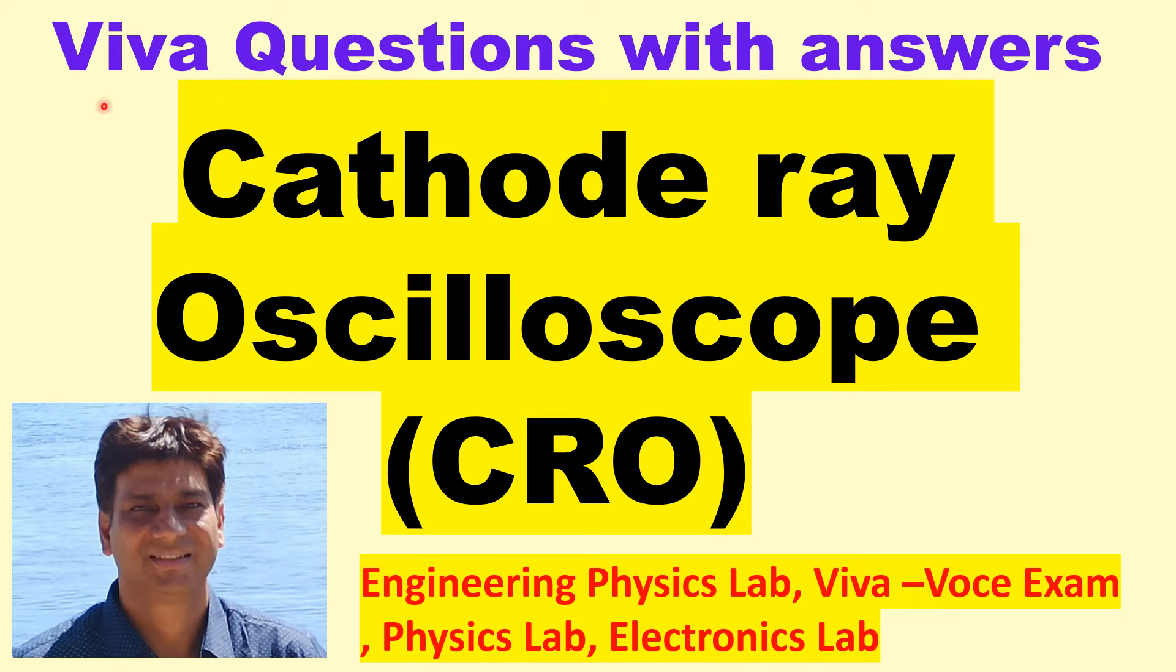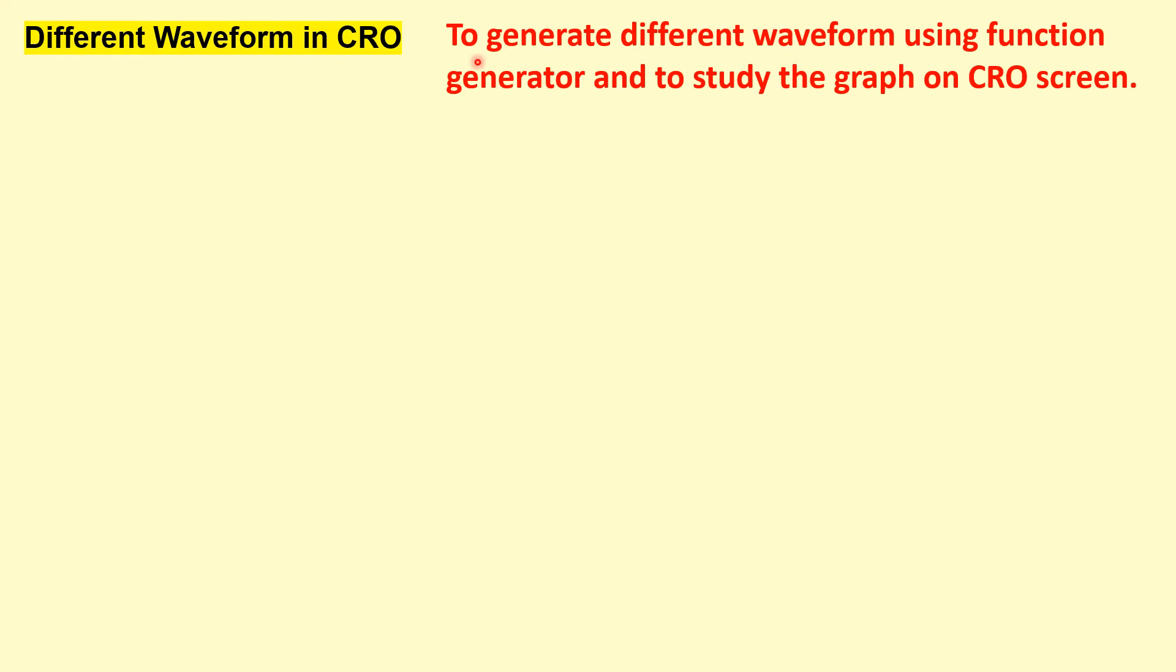Hello friends, in this video I will talk about the important viva questions based on cathode ray oscilloscope or CRO. The aim of this experiment is to study different waveforms in CRO and we have to generate different waveforms using the function generator and to study the graph on CRO screen.